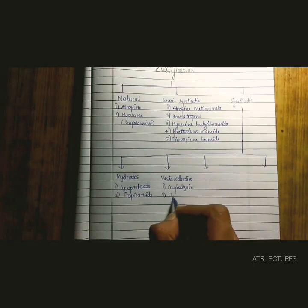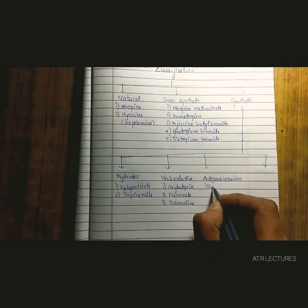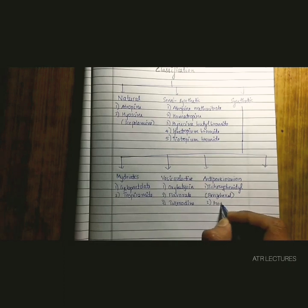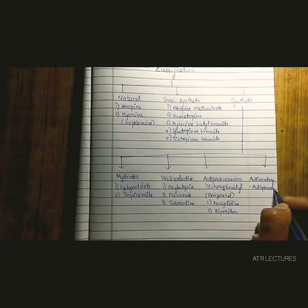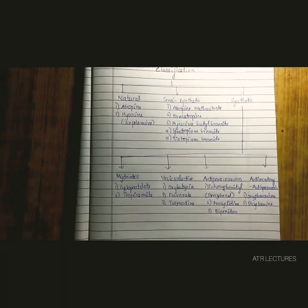Under synthetic, there are four divisions: mydriatics like cyclopentolate and tropicamide; vesico-selective drugs like flavoxate and tolterodine; anti-Parkinsonian drugs like benzhexol, procyclidine, and biperidin; and finally, antisecretory or antispasmodic drugs like oxyphenonium and dicyclomine.